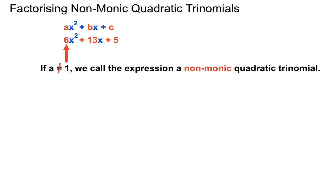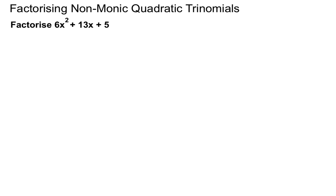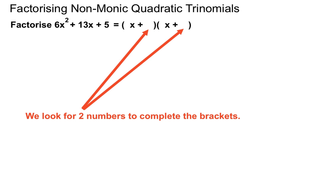Decent name that one. But still, let's have a look at how non-monic quadratic trinomials, the factorising of those, differ from the monic ones. So when we're factorising this, we're looking for two numbers that fit into the brackets. And often we'll have in these non-monic quadratic trinomials, we'll have numbers in front of the x that we don't normally have in the monic ones.